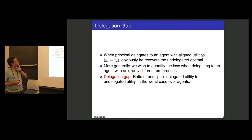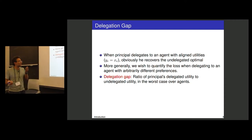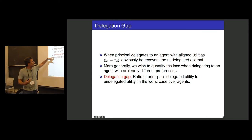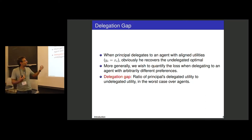If the principal and agent have the same utilities, you can recover the first best, or what we call the undelegated optimum. More generally, we want to see what happens when the agent has arbitrarily different preferences. We measure the loss via the delegation gap — the ratio of the principal's delegated utility to their undelegated utility in the worst case over agents.